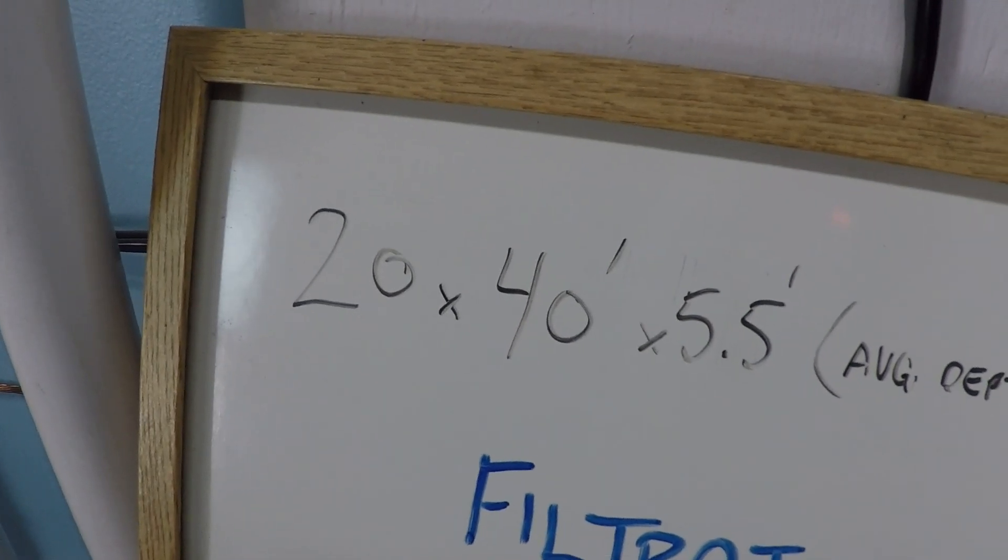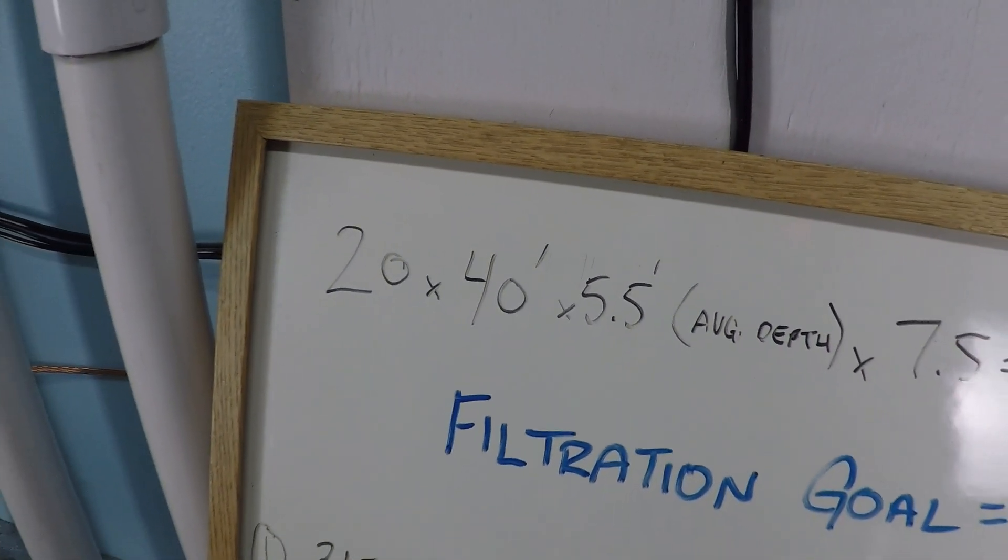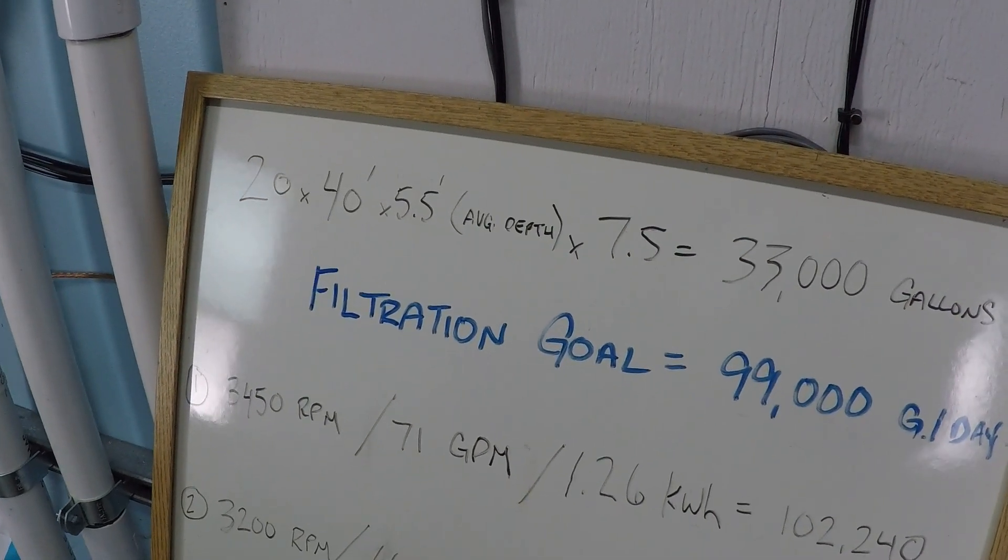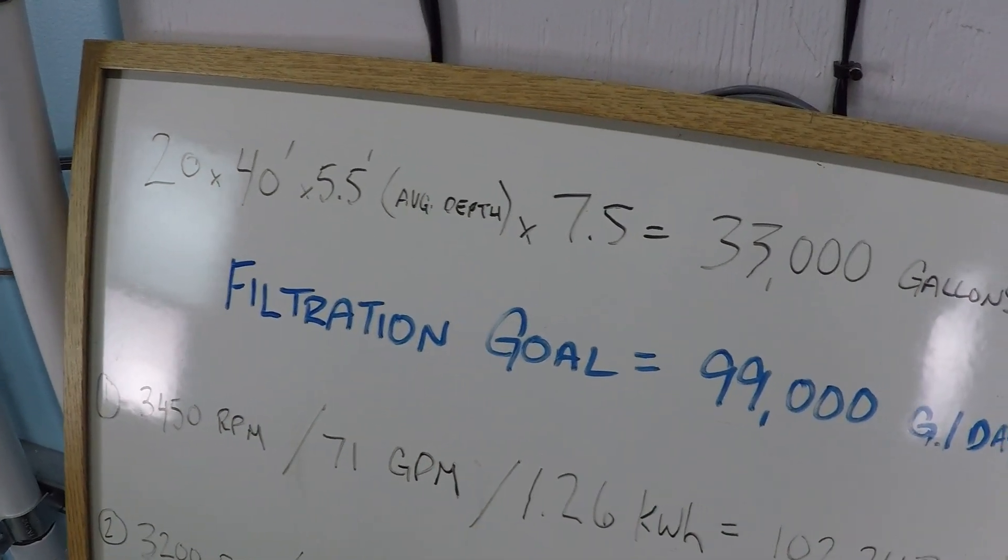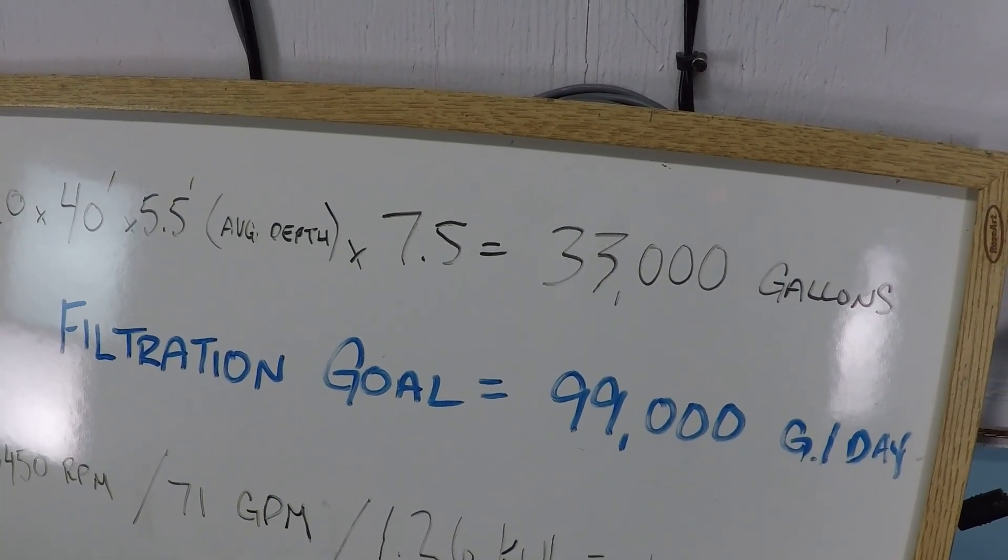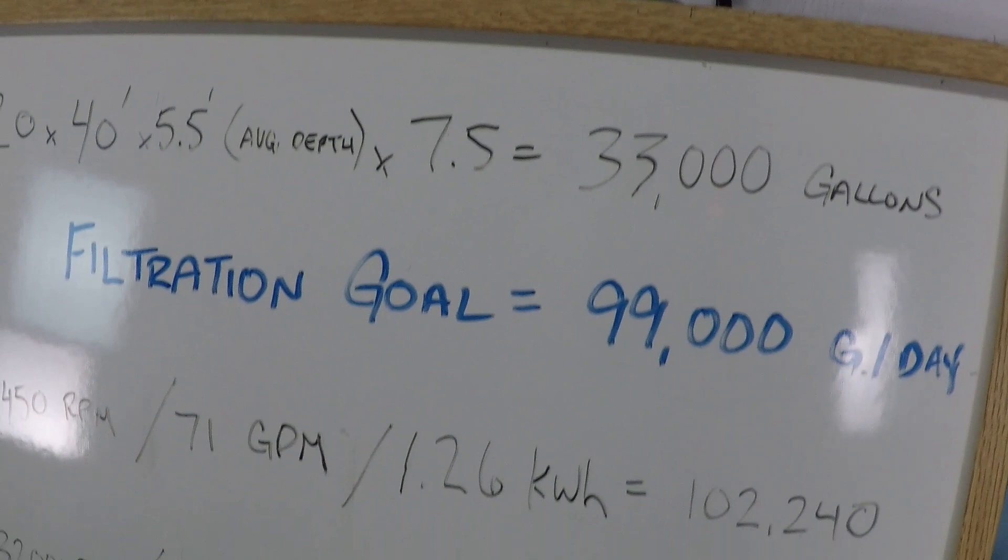In my last video, I was talking about a 20 by 40 swimming pool that had inch and a half plumbing, and we were trying to decide what should the filtration goal be for this pool, which should be three times the volume of the pool every 24 hours as a minimum value.